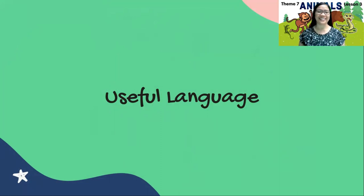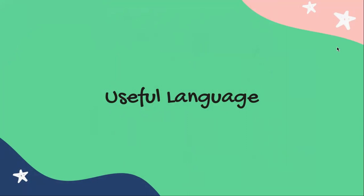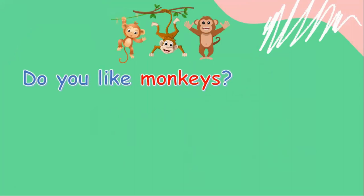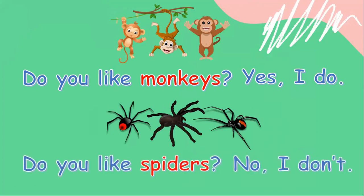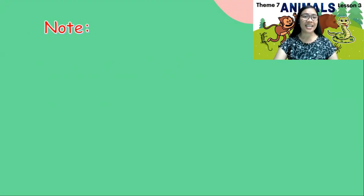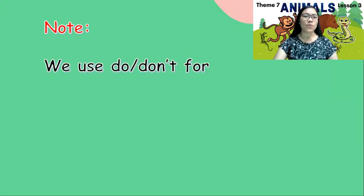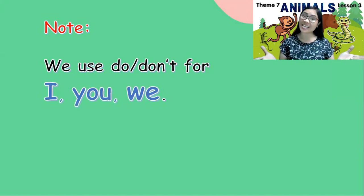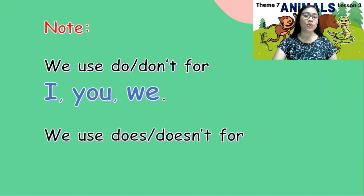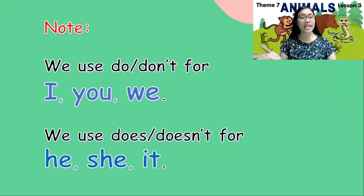Useful language — listen carefully, then practice. Do you like monkeys? Yes, I do. Do you like spiders? No, I don't. Take note: we use do/don't for I, you, and we, and we use does/doesn't for he, she, and it. Remember that!